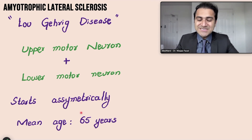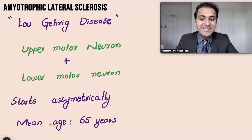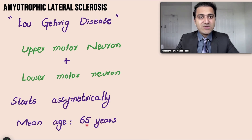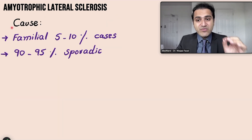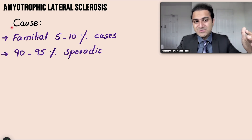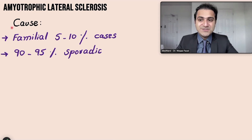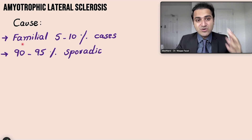ALS starts asymmetrically — it involves one side of the body much more compared to the other side, and the mean age of patients is usually 65 years, though it can also involve younger patients. In 5–10% of cases there is a family history, but in the majority — 90–95% of cases — there is no family history and it happens on its own. That is called a sporadic disease.